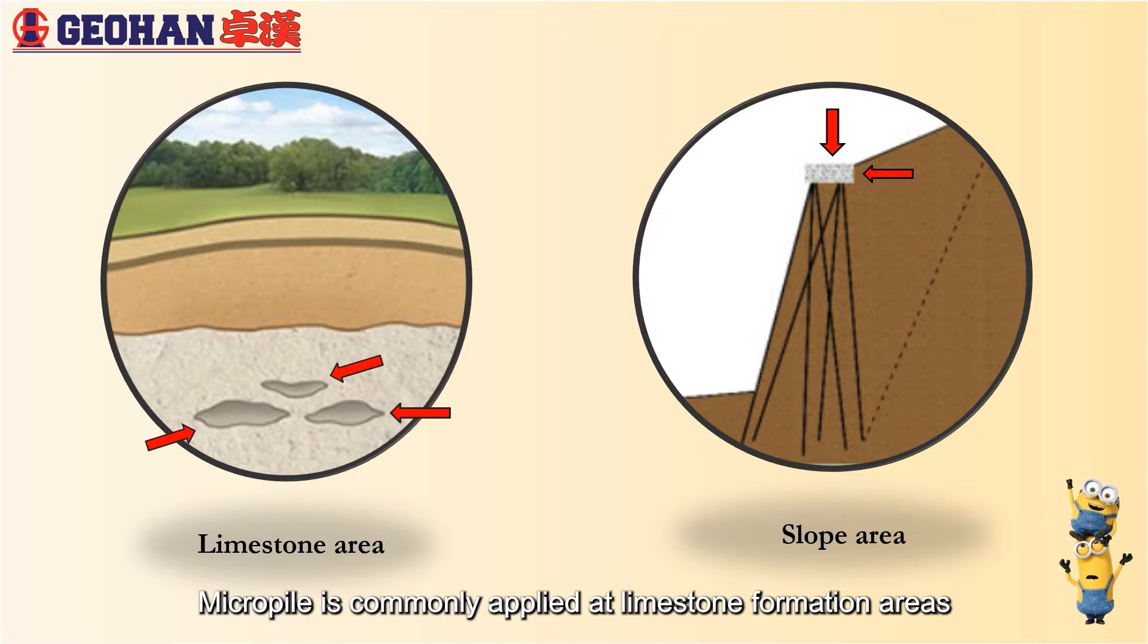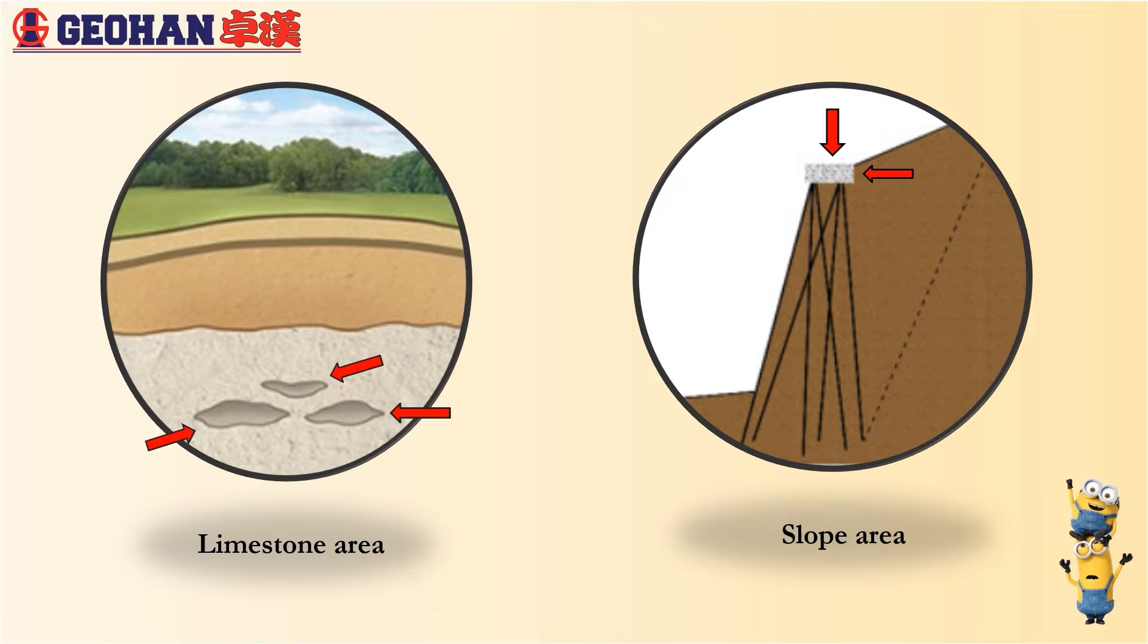MicroPile is commonly applied at limestone formation areas where cavity is encountered. Besides, MicroPile also can be installed at various angles, at sloped areas, and is capable of resisting axial and lateral loads.